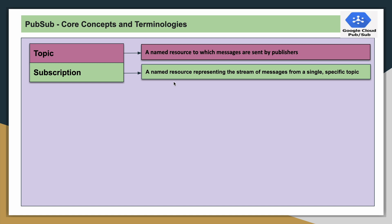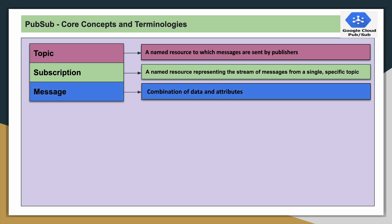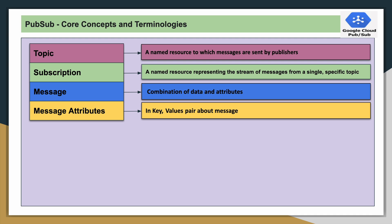Then subscription — a subscription is also a named resource through which a subscriber will receive the message. Without a subscription, the subscriber cannot receive messages from a single or multiple topics. Then message — this is the actual data using which two different applications will communicate. And then message attributes — these are basically key-value pairs which describe the data available in the message.